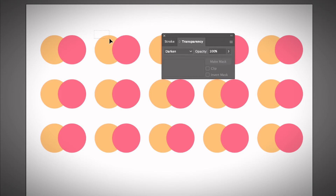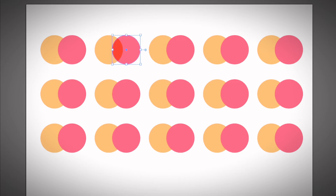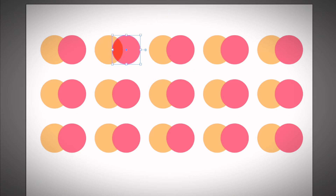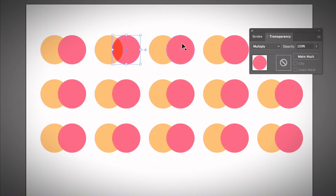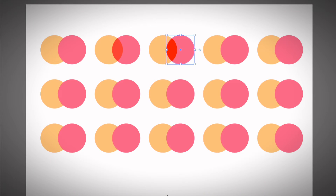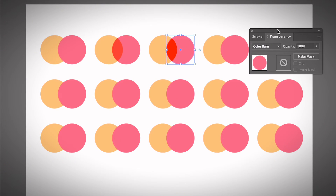Let's try another option — Multiply. You do see a difference here. When you choose Multiply, it darkens the overlapping parts as it multiplies the base color by the blend color. Then there's Color Burn, which darkens the base color to reflect the blend color. So the first three options — Darken, Multiply, and Color Burn — all darken the overlapping color.